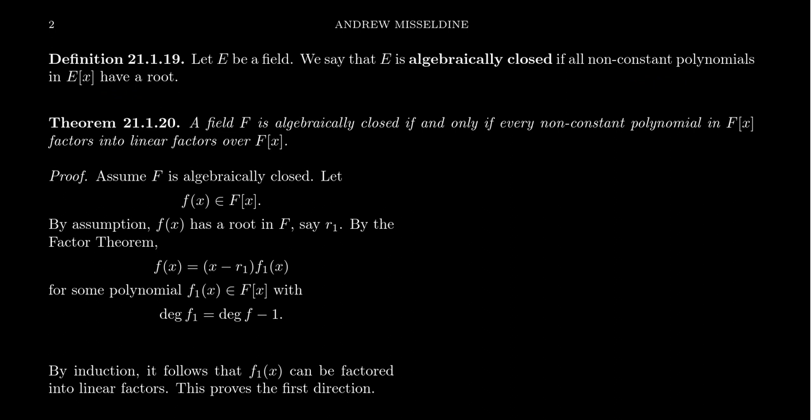Linear polynomials always have roots — not a big deal. But we've seen many examples of fields and polynomials which are irreducible. If you're irreducible, of course you don't have a root. If your field is algebraically closed, then you have a root for every polynomial. A very important example of such a field would be the complex numbers. By the fundamental theorem of algebra, the complex number field is an algebraically closed field.